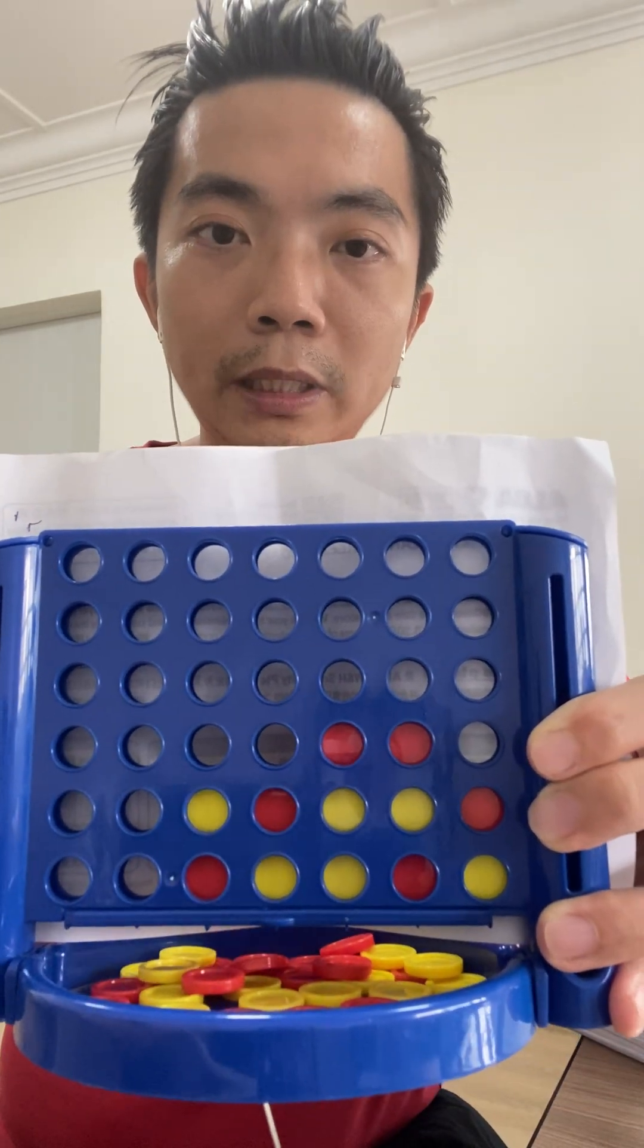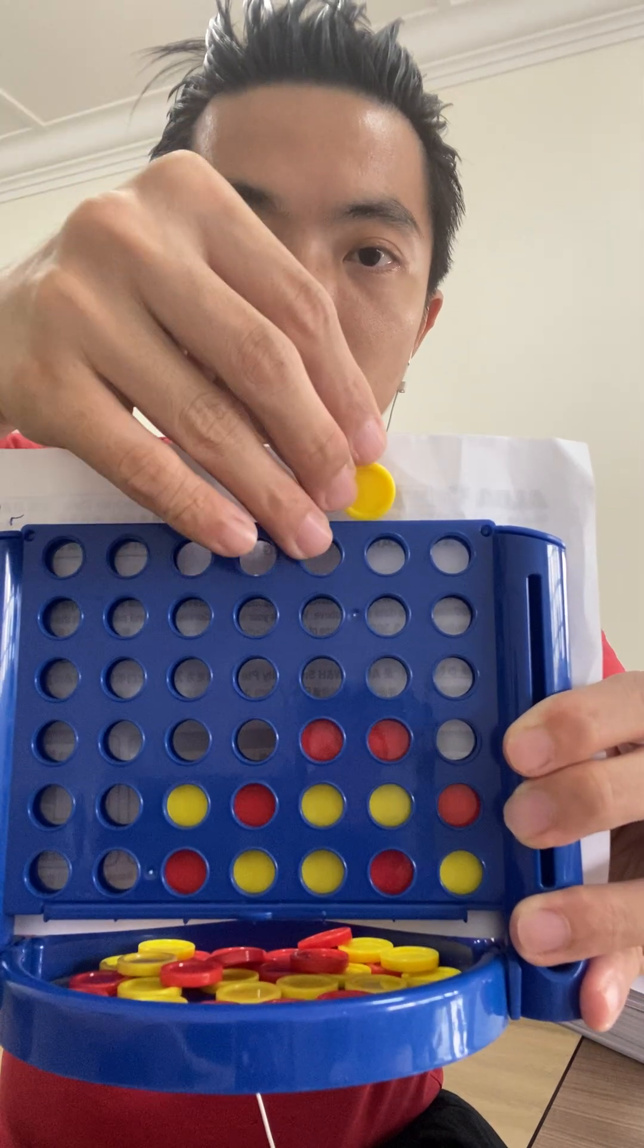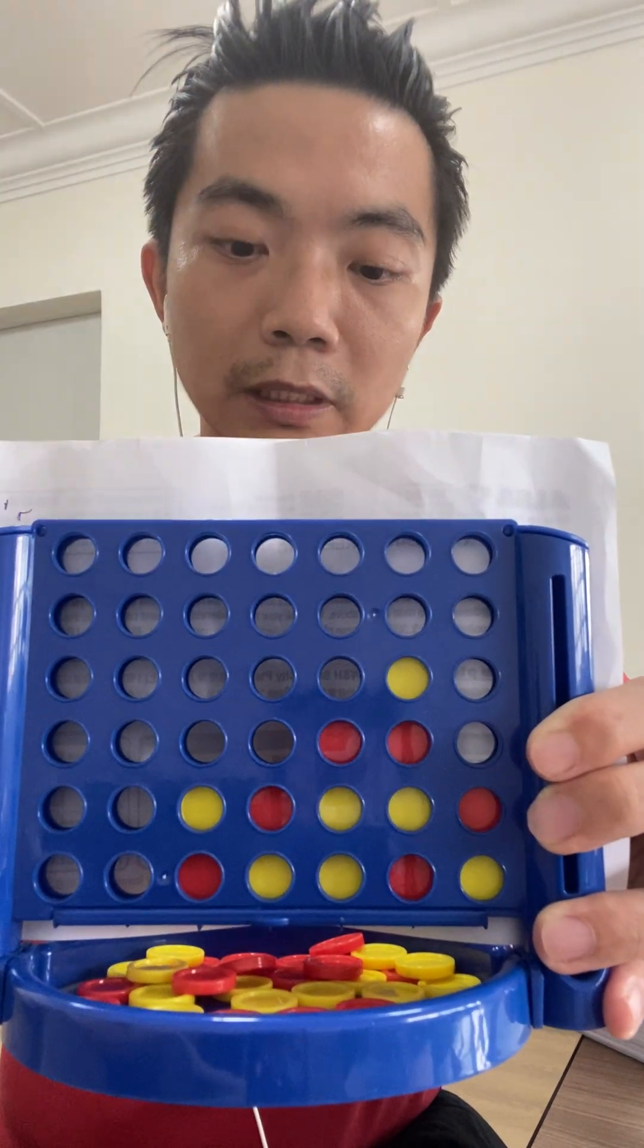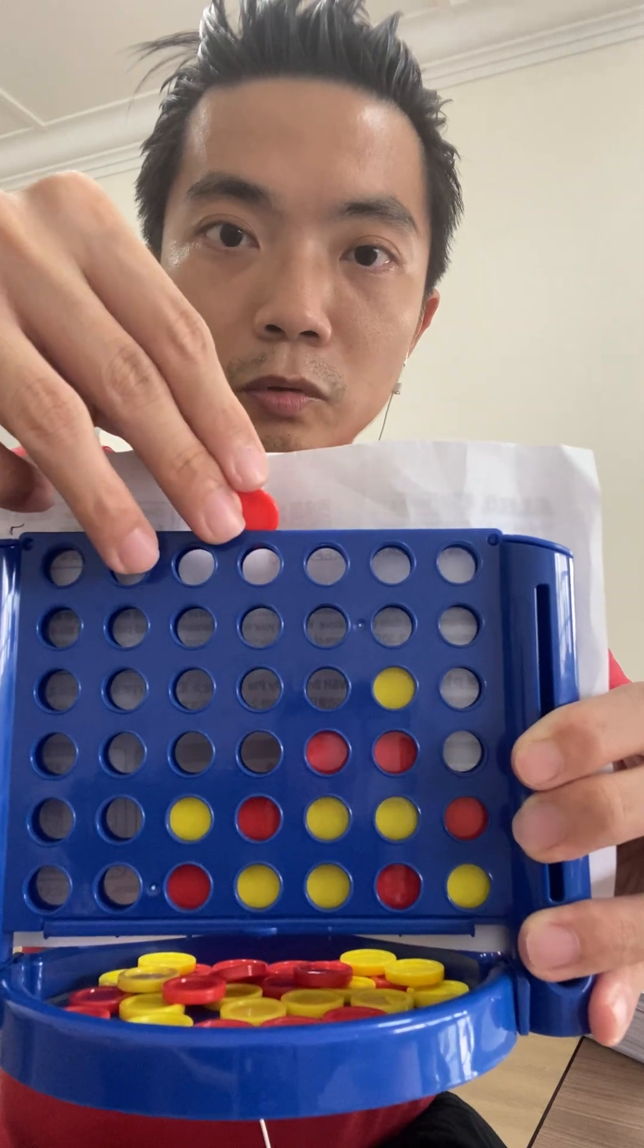So, the yellow player who is my opponent has no choice but to block the winning check over here. And immediately, I make this move.